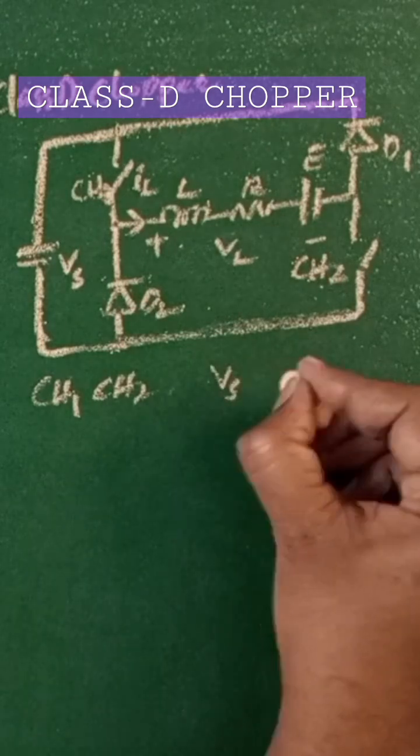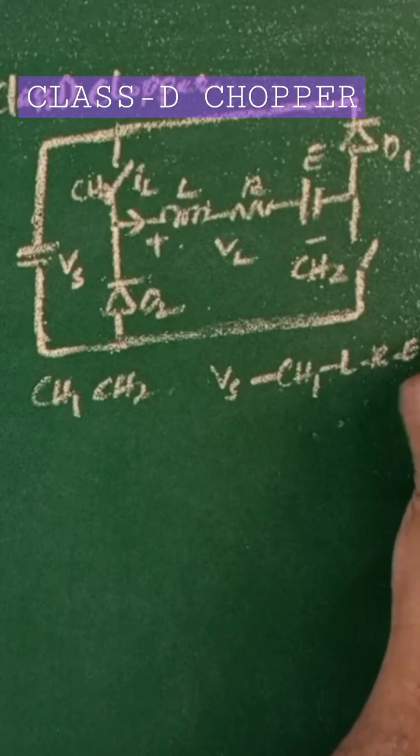the current flows from Vs to CH1, L, R, E, CH2 to Vs negative. When chopper 1 and chopper 2 are off, the load current IL will be positive and continue to flow from the highly inductive load. The diodes D1 and